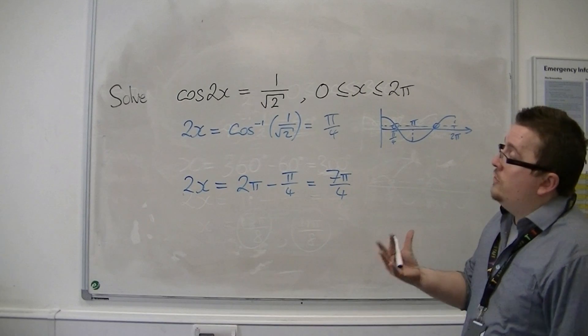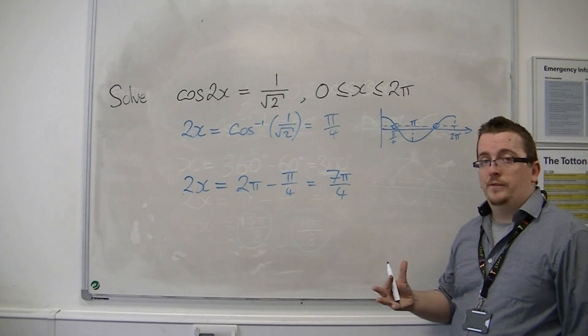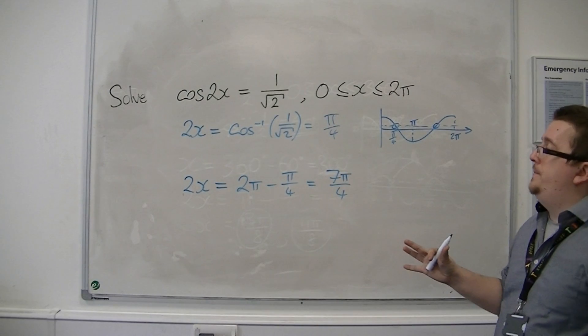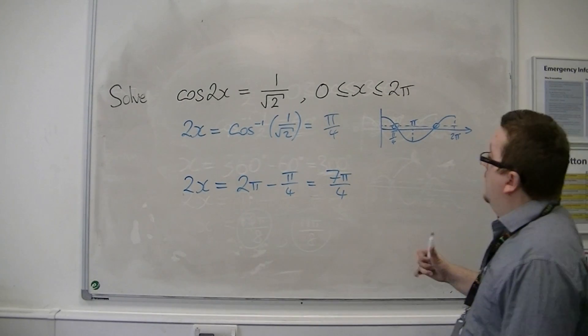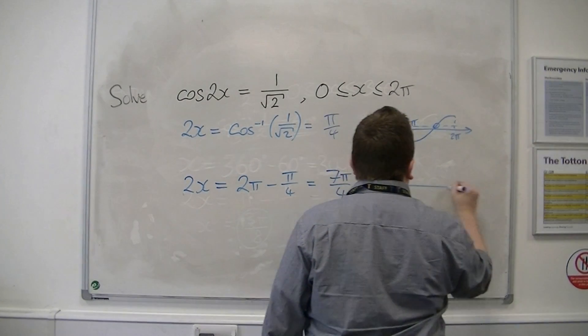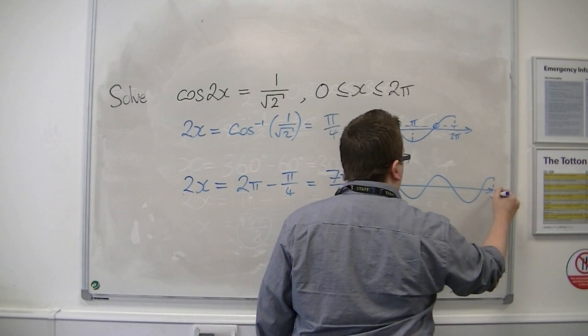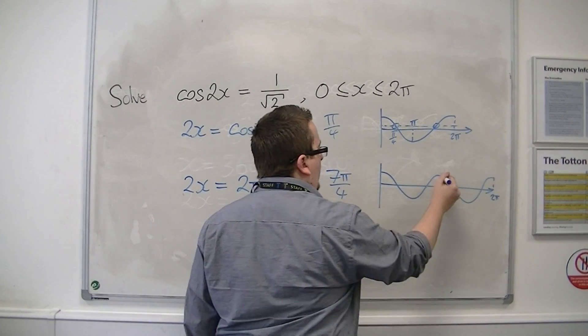So that means that the period of cosine has also been halved. It is now pi rather than 2pi. So in order to get all of the solutions,